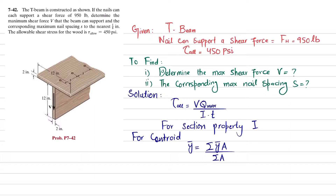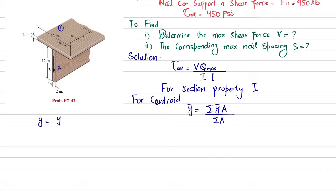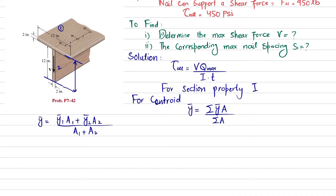You can see there are two wood pieces. We will take this as element one and this as element two. We will take the base as a reference. Y-one-prime is the distance from the base to the mid of the first section. This is 12 plus half of 2, which is 1 inch, so Y-one-prime is 13 inches.